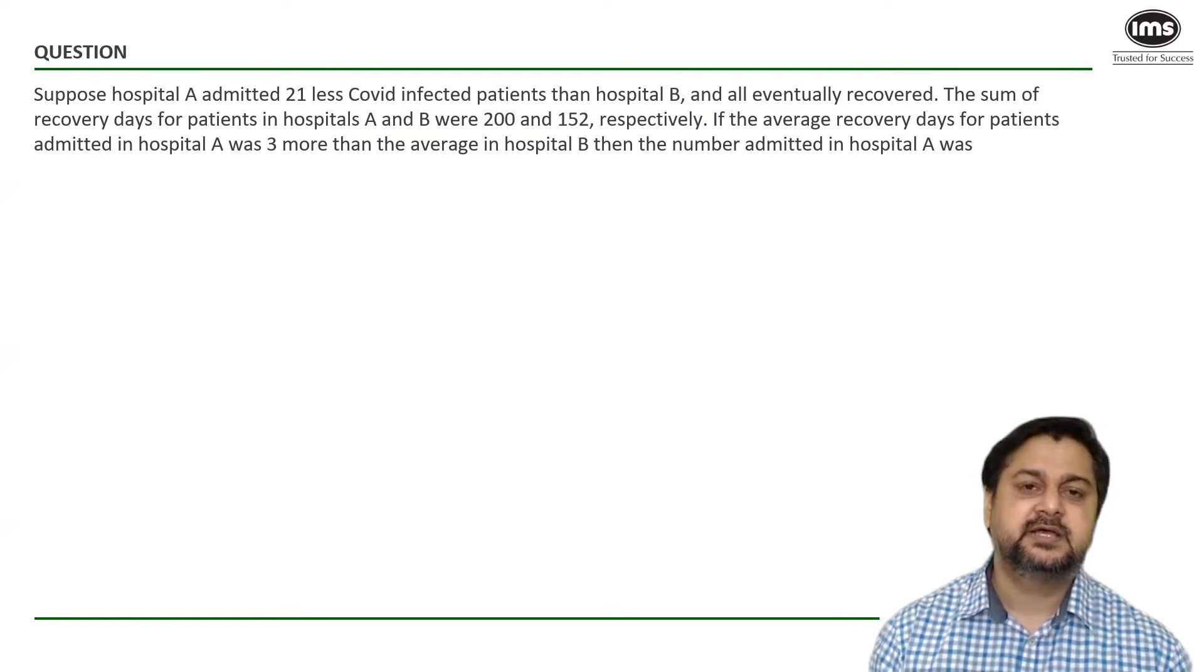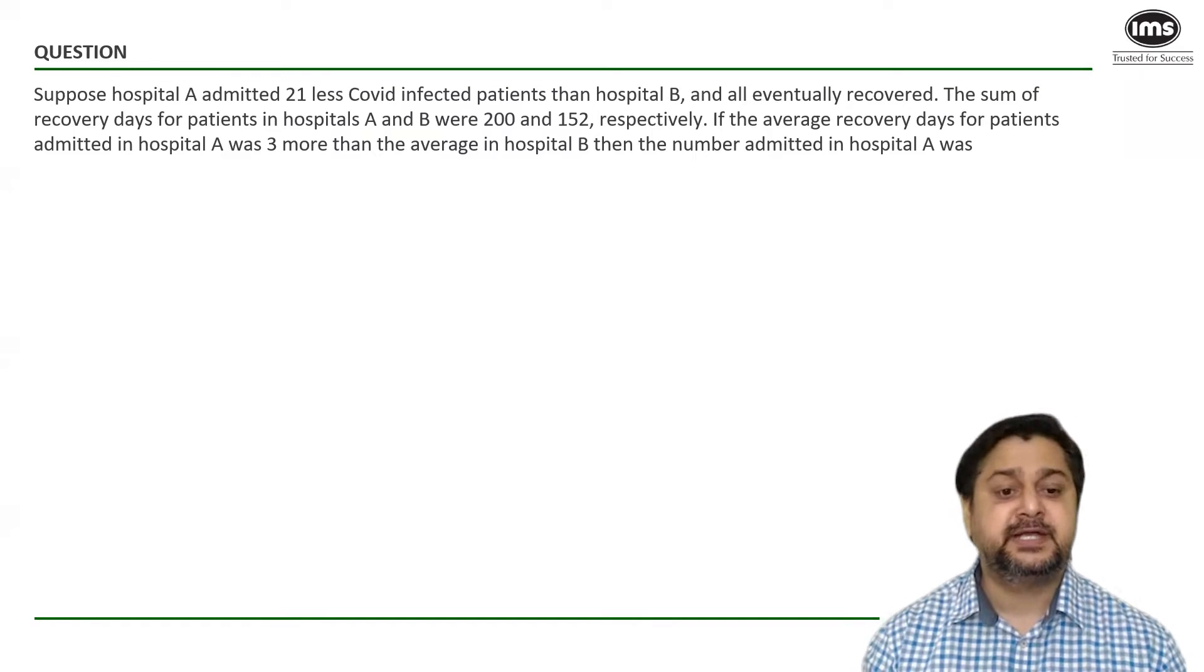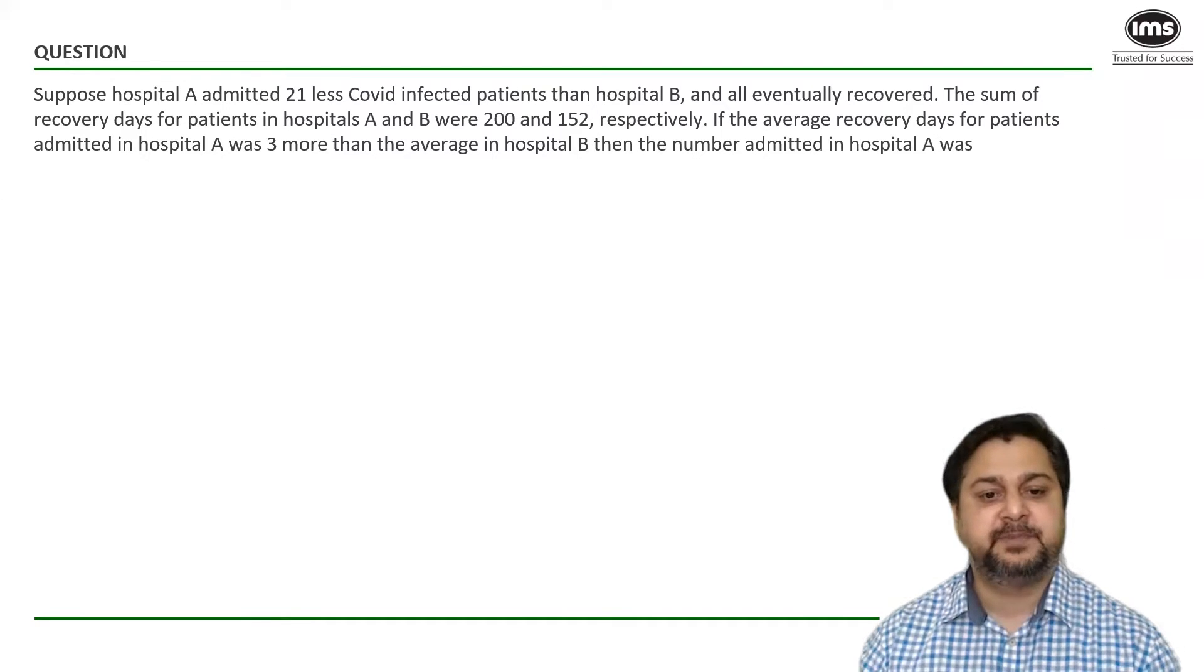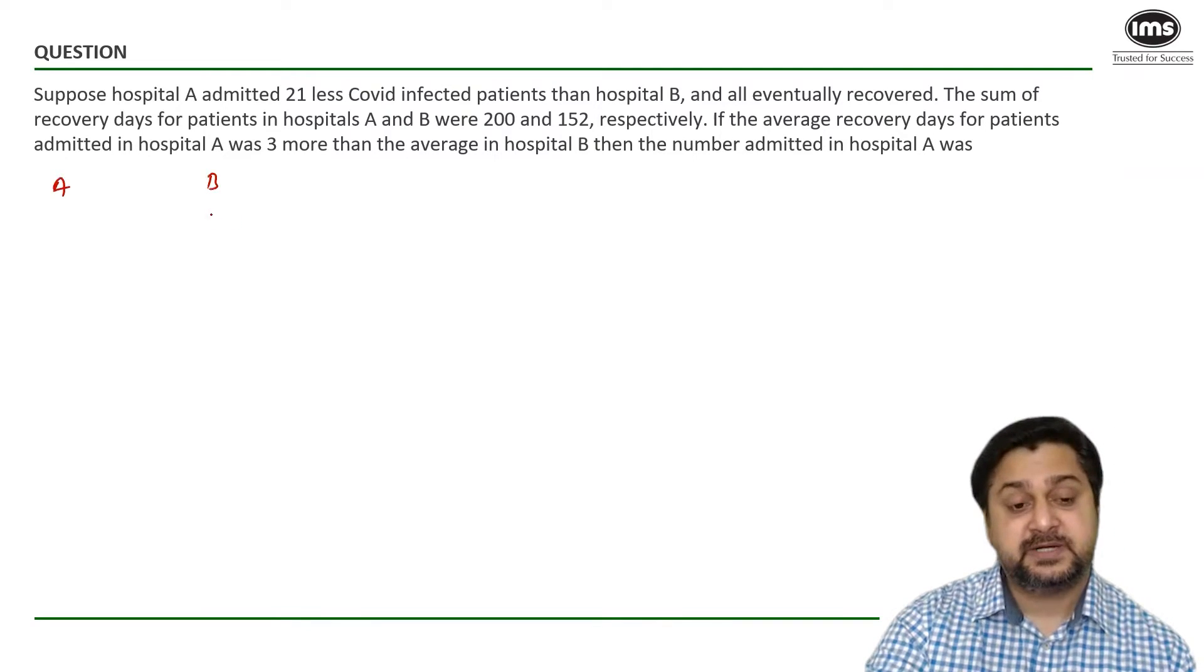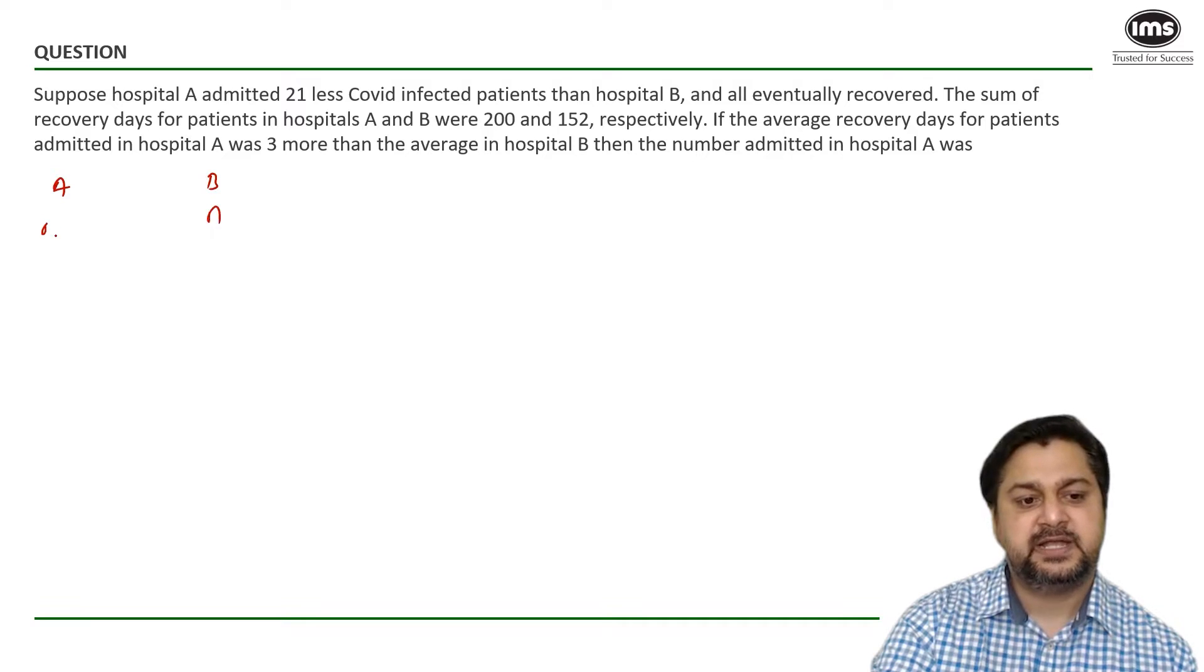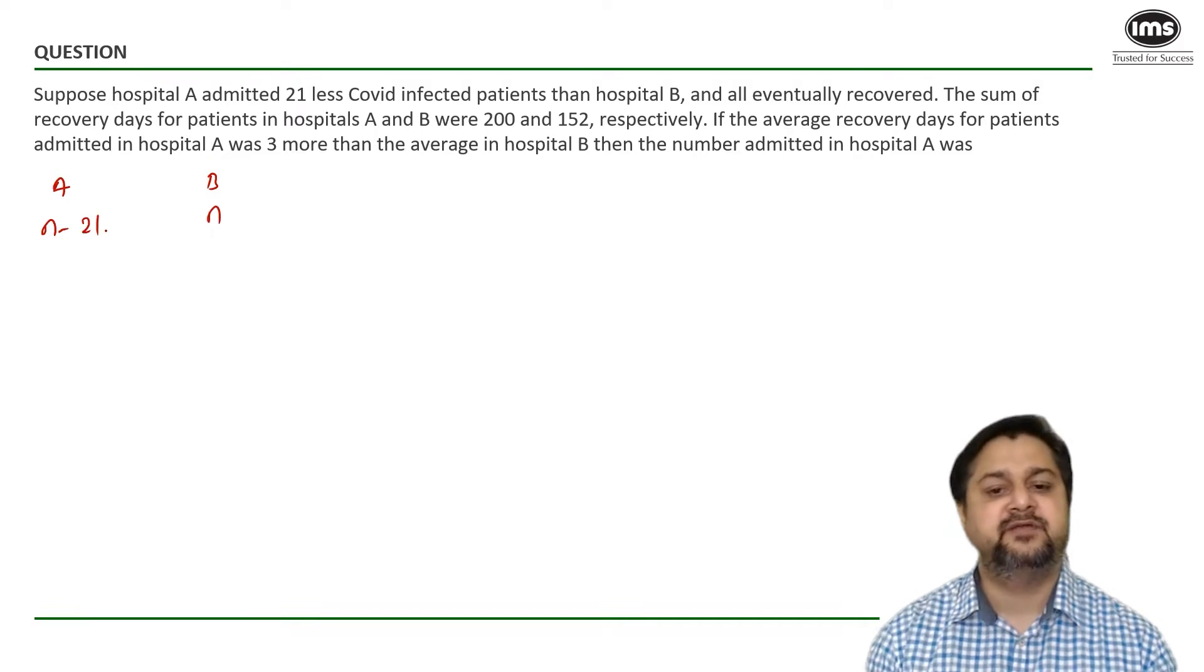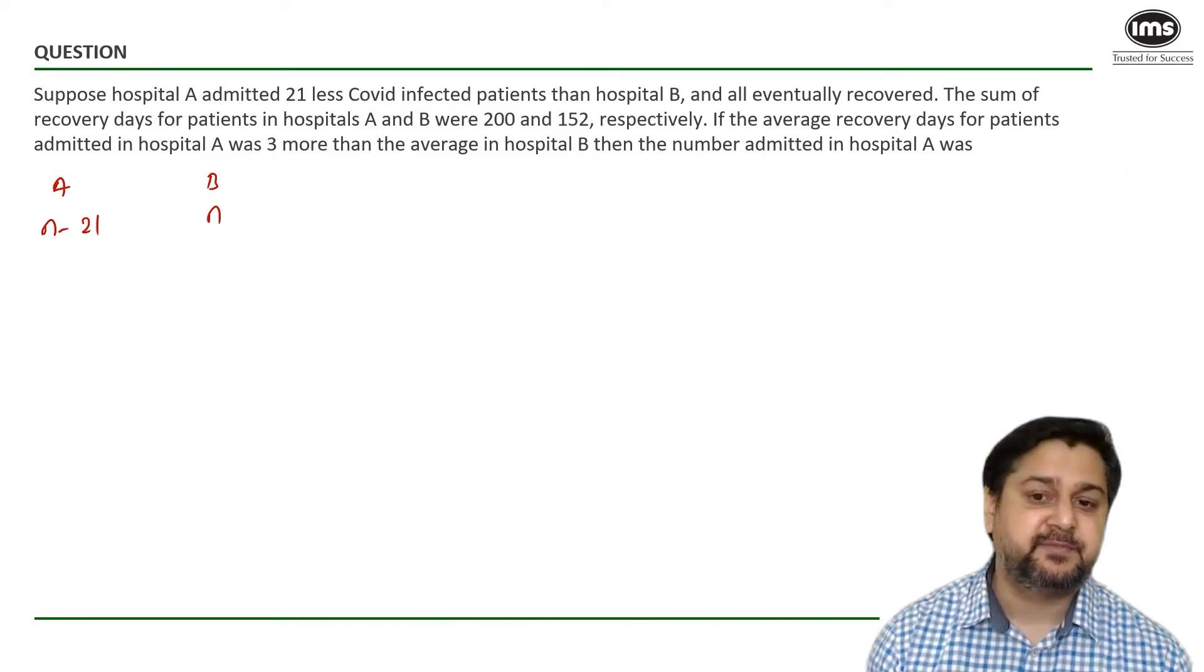The question says suppose hospital A admitted 21 less COVID-infected patients than hospital B. So hospital A and hospital B. If hospital B has N patients, hospital A would have N minus 21 and eventually everybody recovered.